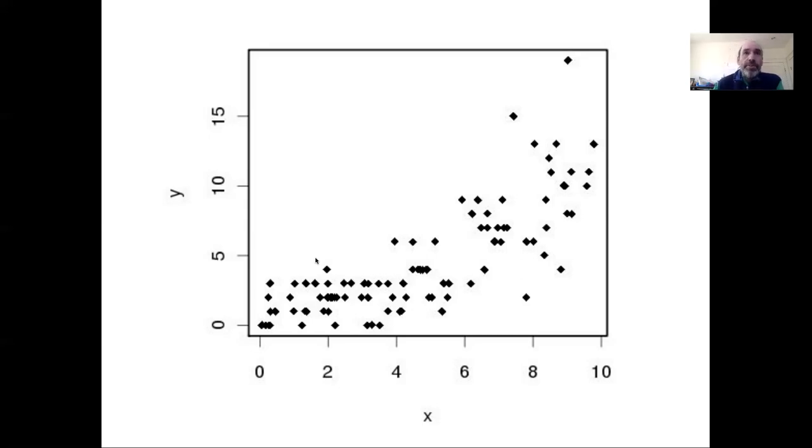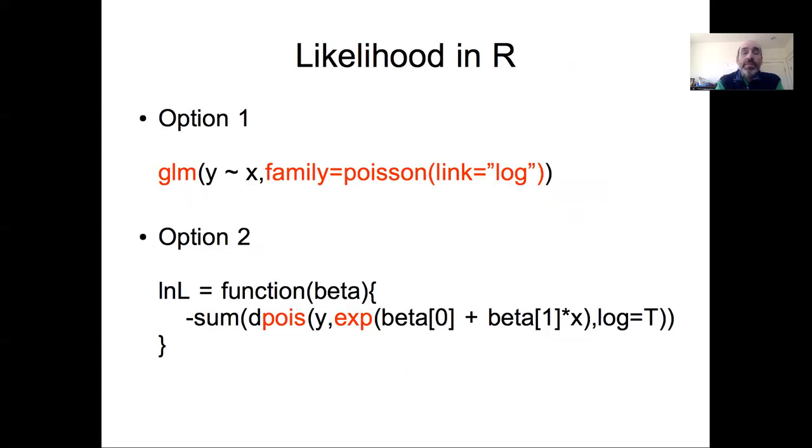So I'm going to first start talking about GLMs from a maximum likelihood perspective, the Poisson GLM from maximum likelihood perspective, where there's basically two options if we're working in R. One is like we talked about in the last lecture when we were talking about logistic regression, that there is the GLM function in R. We can write out a formula using our standard LM formula syntax, but now we would say that the family is the Poisson, and here we're going to use the log as the link function.